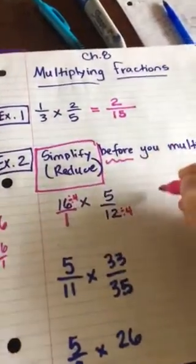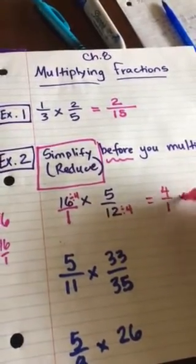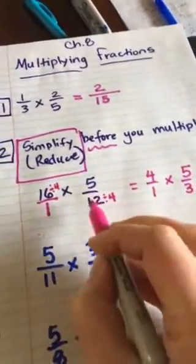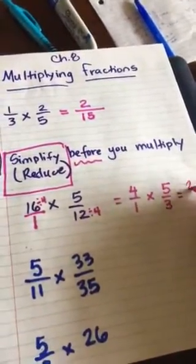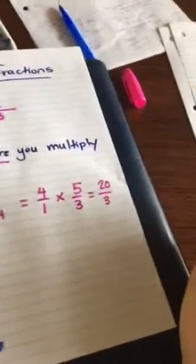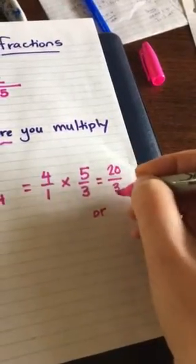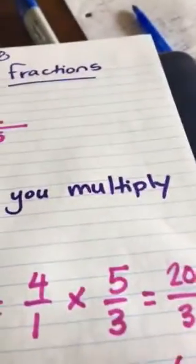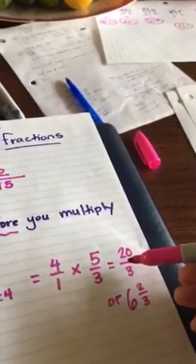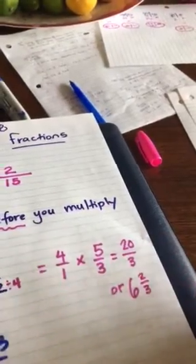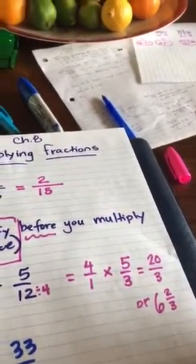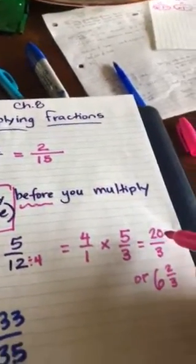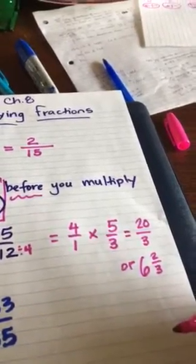Do you see that you have a 16 on top and a 12 on the bottom? The biggest common factor that will go into both is 4. So you divide both by 4. Your new problem will be 4/1 times 5/3. Reduce first, then multiply straight across: 20/3. Or we can always write an improper fraction as a mixed number by dividing. What's 20 divided by 3? That's 6 with 2 left over, so 6 and 2/3. An improper fraction is one where your numerator is larger than your denominator.